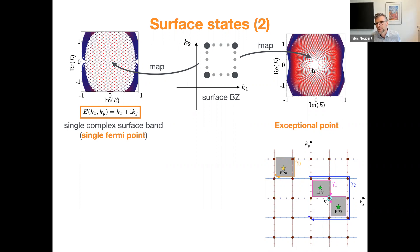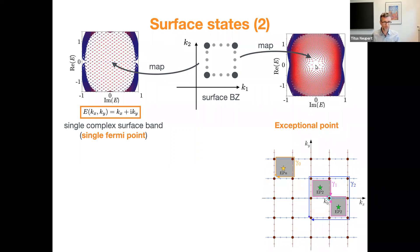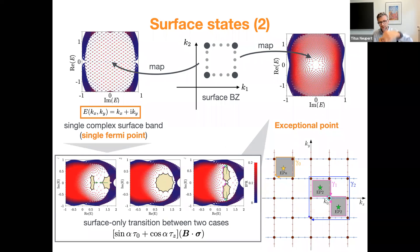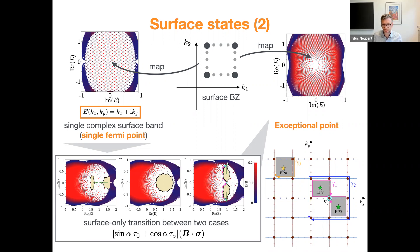There is an exceptional point at the origin of the complex plane — the pre-image is an exceptional point on the surface of the system. These two extreme situations are connected to one another: by changing the α parameter in the Hamiltonian — which tells me how the g-factor is distributed between the two orbitals — I can make exceptional points appear or disappear from the bulk bands. They can merge or bounce off each other. The bottom line is you can interpolate between the single surface sheet and the exceptional point on the surface without a bulk phase transition, just by changing the surface Hamiltonian.